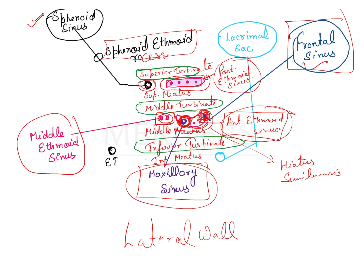In the inferior meatus, we see an opening which is the opening of the lacrimal sac. There will be a wall guarding this particular opening, and that is known as Hasner's valve.